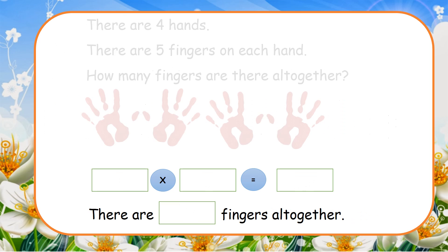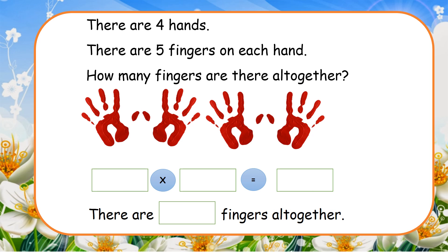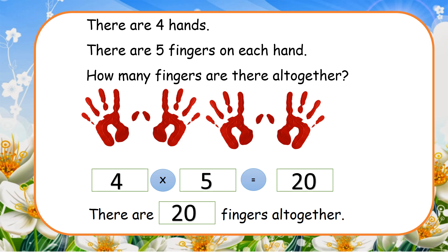There are four hands. There are five fingers on each hand. How many fingers are there all together? Four times five equal twenty. There are twenty fingers all together.